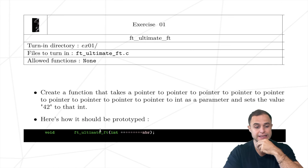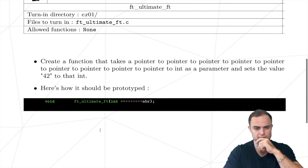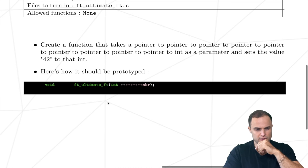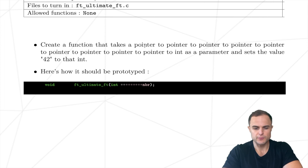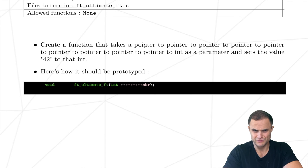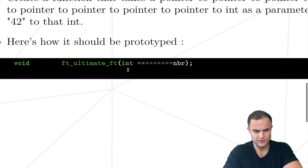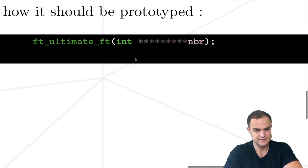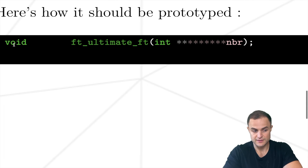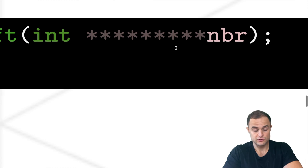Today we're still dealing with pointers, and this time we have to do something really interesting: create a function that takes a pointer to a pointer to a pointer... all the way down. Here is how it should be prototyped - a function that doesn't return any value but takes this fancy pointer as input.